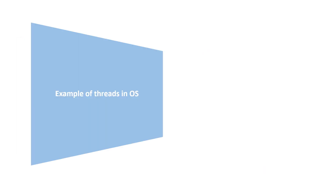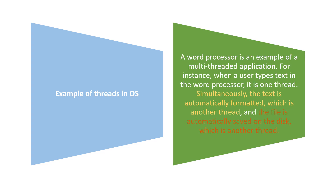As an example, a word processor is a multi-threaded application. When a user types text, that is one thread. Simultaneously, the text is automatically formatted, which is another thread, and the file is automatically saved to disk, which is yet another thread. The whole application is the process — when we run the word processor it becomes a process — and within that process we can have a number of threads, each with a single sequential activity.